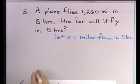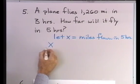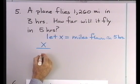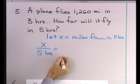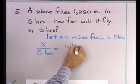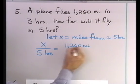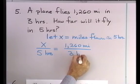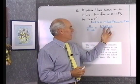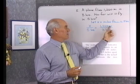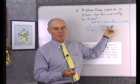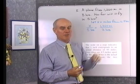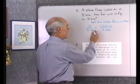Now, I'm going to set up a proportion this way. The number of miles it flies in 5 hours is to 5 hours, as 1,260 miles is to 3 hours. So I have miles over hours and miles over hours. I just want to make sure that I have the same ratio of units on one side and on the other side. Then I can really just forget about the units. Here I have a proportion now.